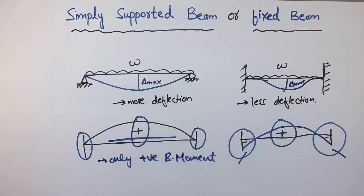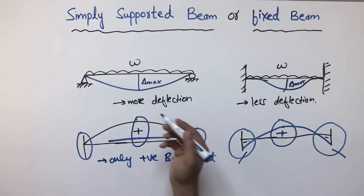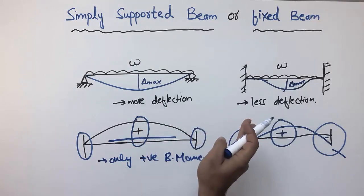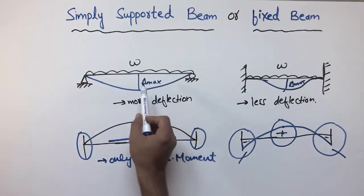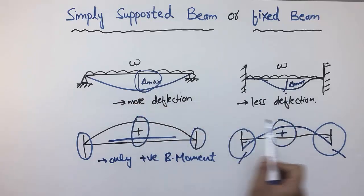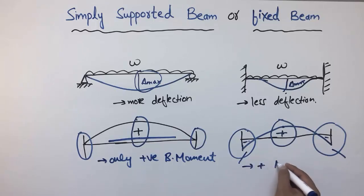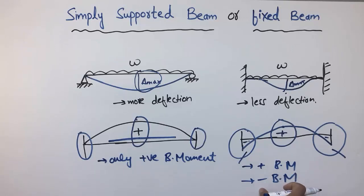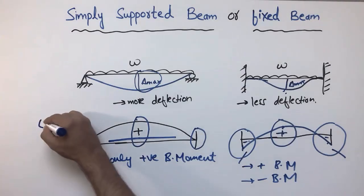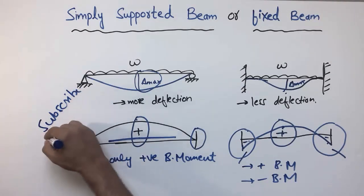This was all about the differences and advantages of the simply supported beam and the fixed beam. The main difference is that the simply supported beam has maximum deflection at the midpoint with only positive bending moment, while the fixed beam has less deflection with both positive and negative bending moments, requiring two different types of reinforcement — negative reinforcement at the supports and positive reinforcement at the middle. Hope you guys understand, and don't forget to subscribe for more civil engineering videos.